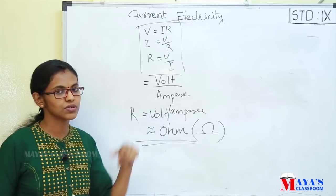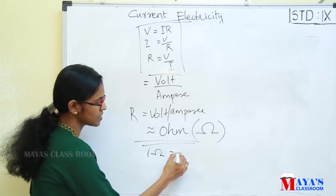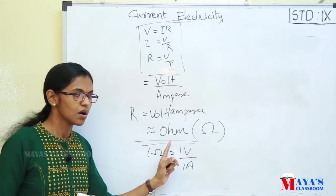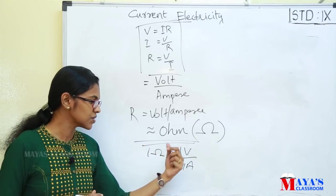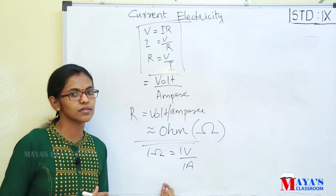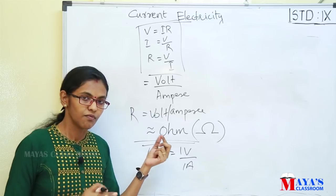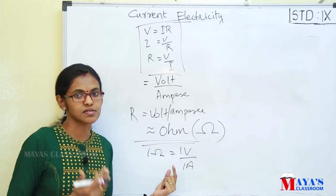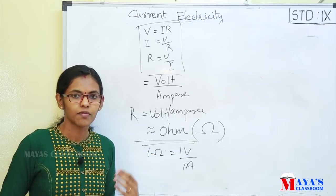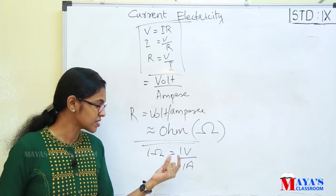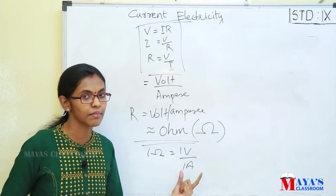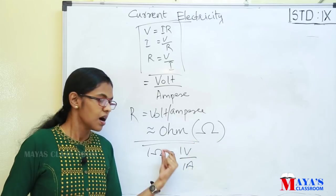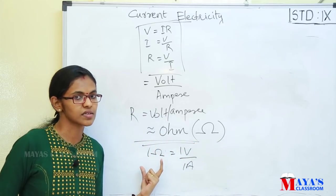The resistance equation is R equals V by I. So 1 Ohm equals 1 volt divided by 1 ampere. What does this mean? When the potential difference is 1 volt and the current flowing through a conductor is 1 ampere, the resistance is 1 Ohm. That means: when a potential difference between the ends of a conductor is 1 volt and the current flowing through it is 1 ampere, the resistance of the conductor is 1 Ohm.